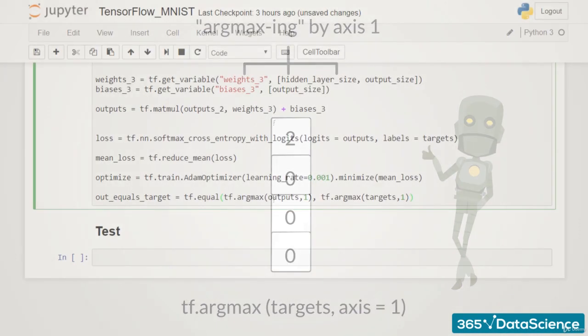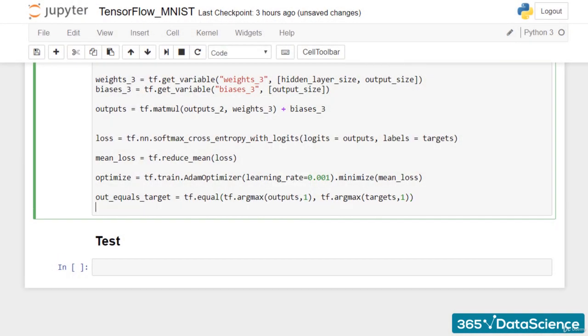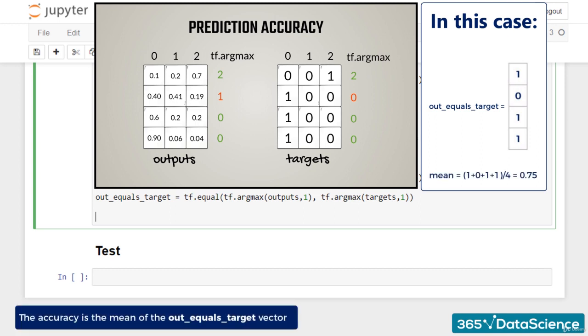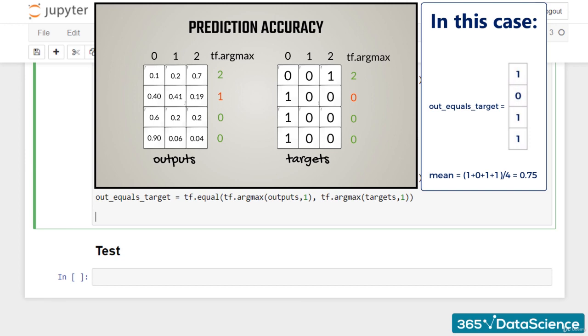Alright. So, out_equals_target is a vector that contains 0 or 1 for each observation, 1 if it is a match and 0 if it isn't. Then, the accuracy is the mean of that vector. We sum up all the 0s and 1s and divide them by their number. We already saw this done through the tf.reduce_mean method.